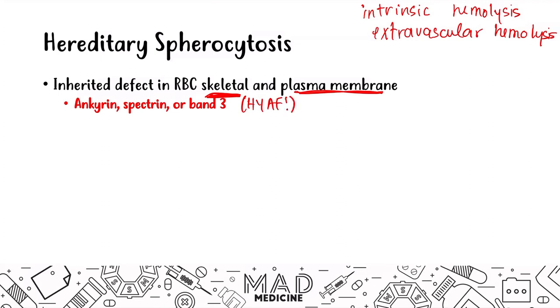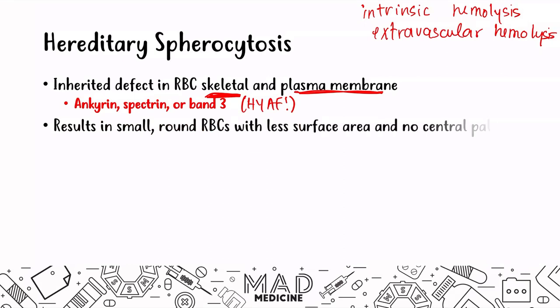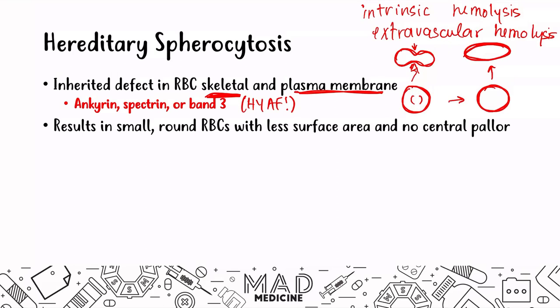What's going to end up happening is you're going to have small, round red blood cells with less surface area and no central pallor. The name spherocytosis refers to the fact that these red blood cells are going to be spherical. Normal red blood cells have a circular shape with an area of central pallor, and that divot in the middle actually increases the surface area. In hereditary spherocytosis, you have a perfectly round red blood cell, so you don't have that increased surface area — you actually have a decreased surface area.